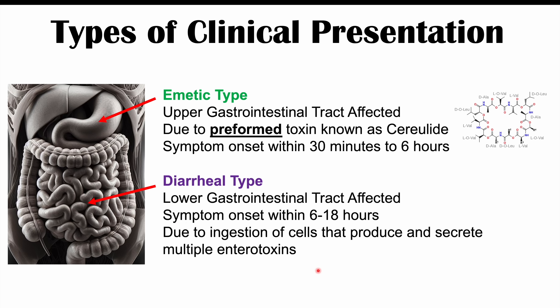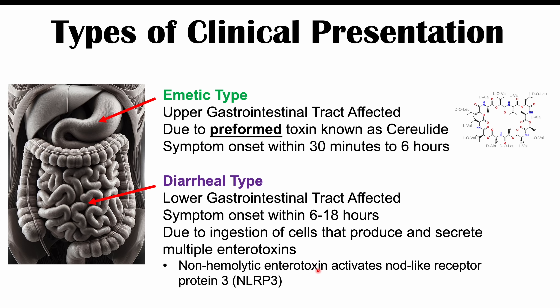There are several different enterotoxins, each with different mechanisms of action. Some activate adenylate cyclase to increase cyclic AMP, leading to watery diarrhea. One example is the non-hemolytic enterotoxin that activates NOD-like receptor protein 3. Regardless of the mechanism, these enterotoxins will lead to profuse diarrhea.